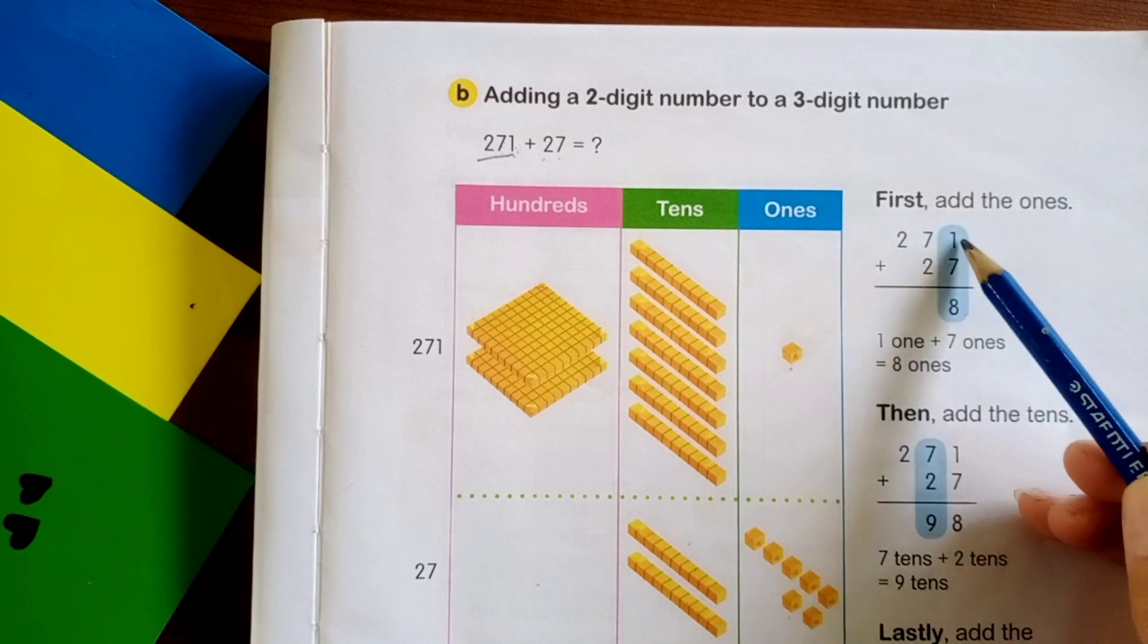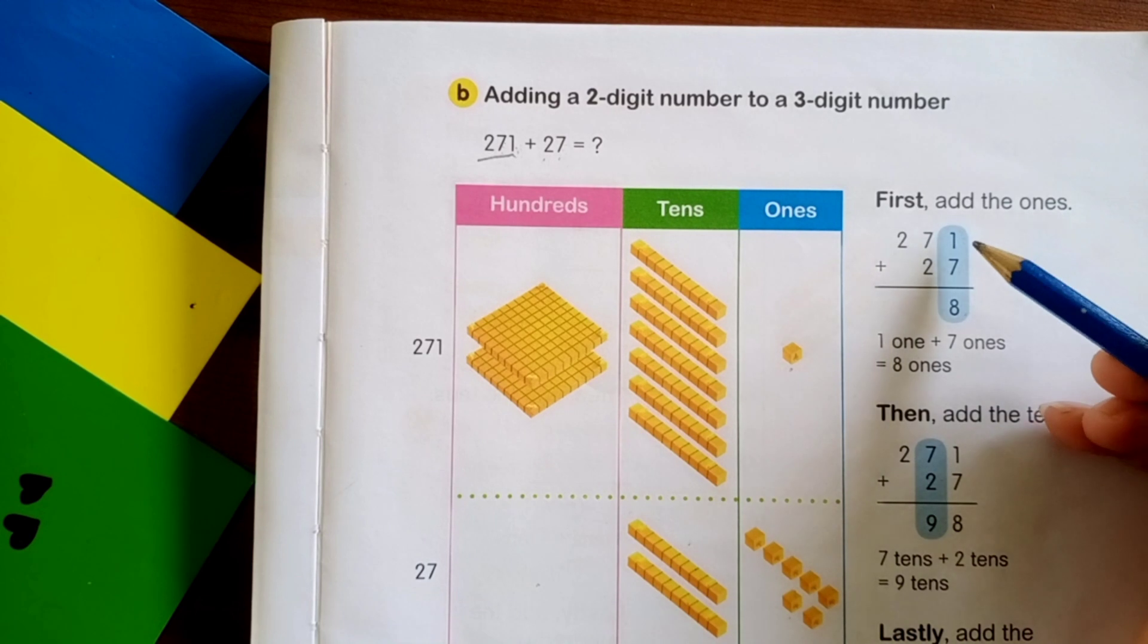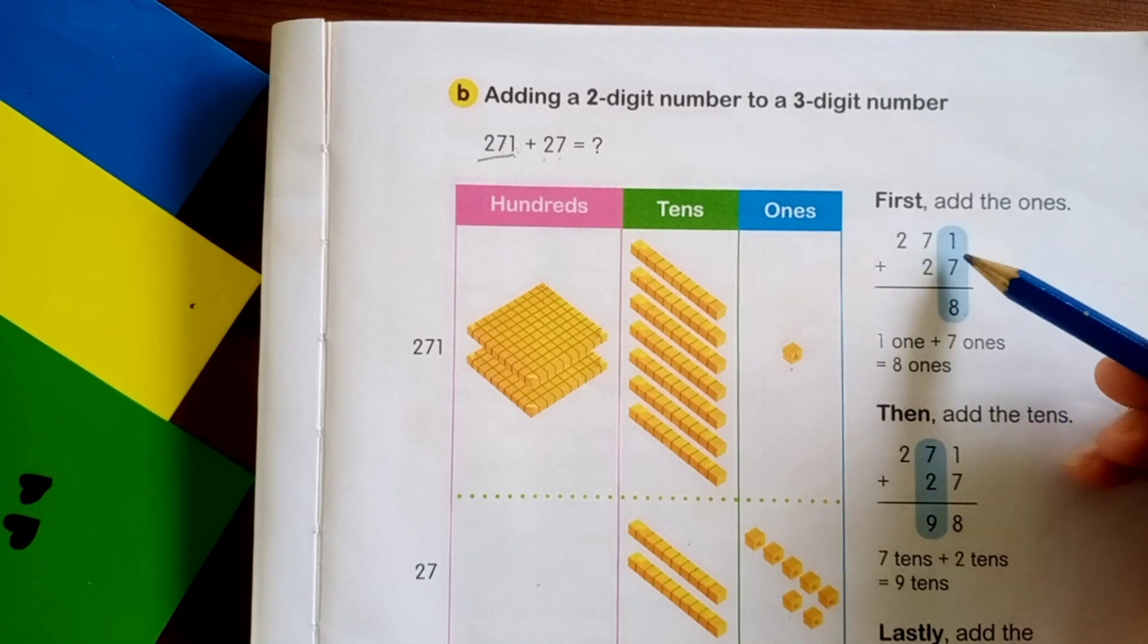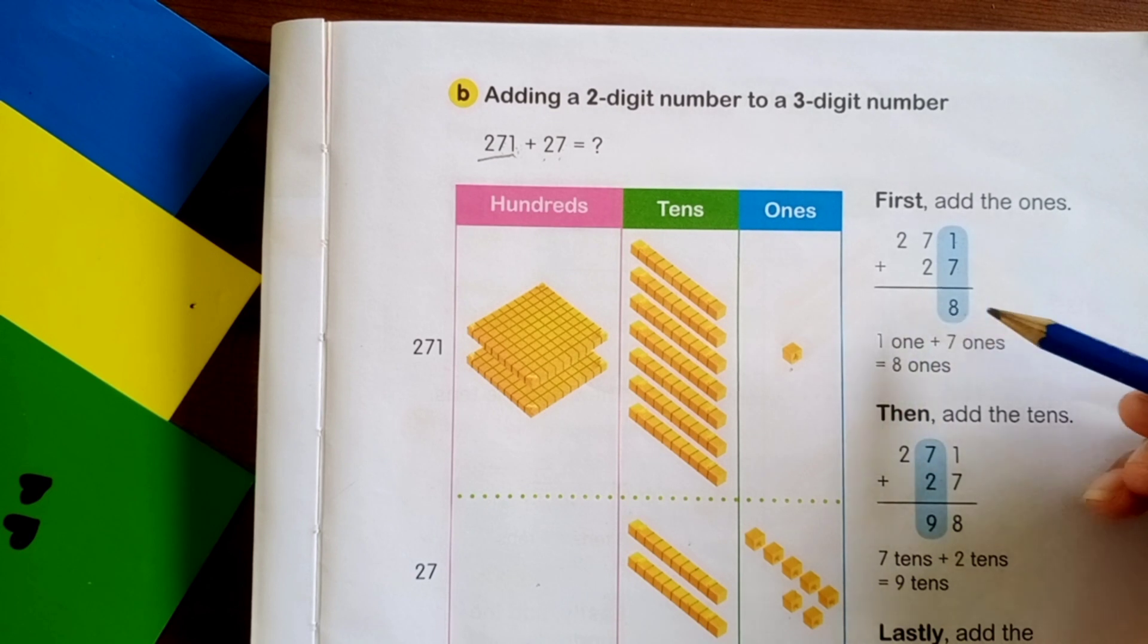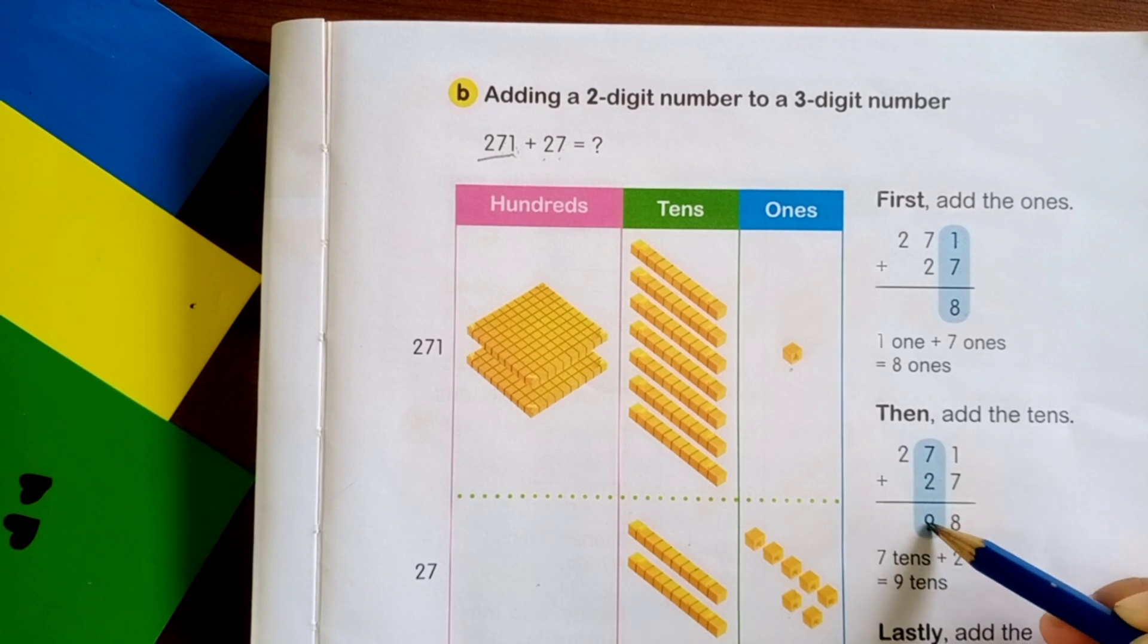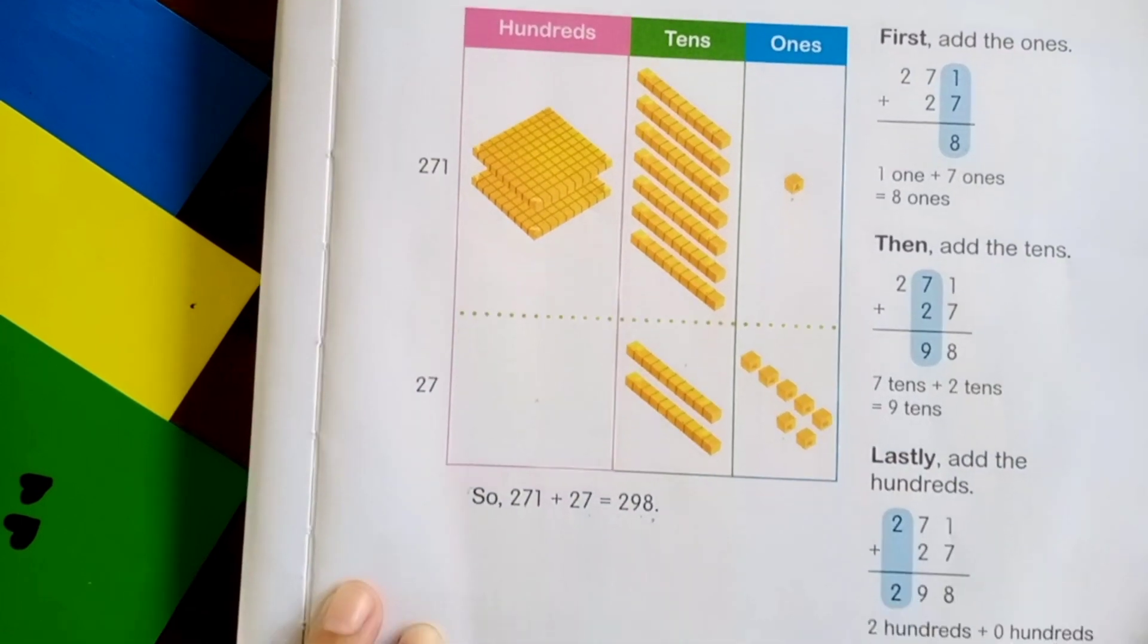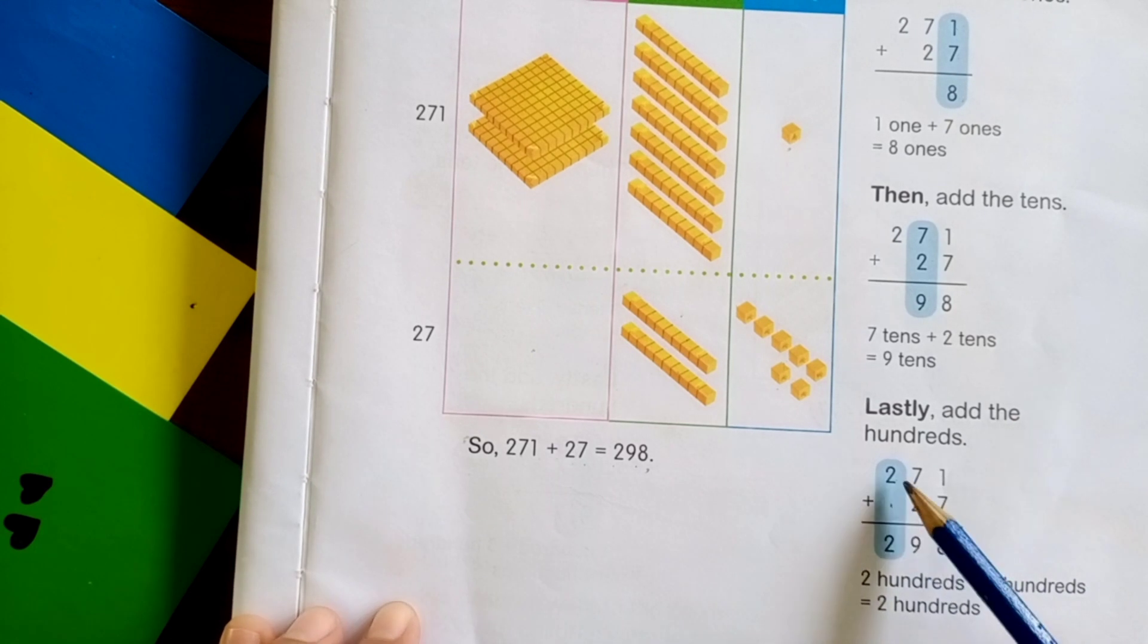271 plus 27. Start from ones. Remember, 1 plus 7 is equal to 8. Next, 7 plus 2 is equal to 9. The last, there is no hundreds here, right? So we just write 2. So 271 plus 27 is equal to 298.